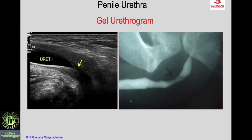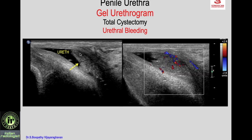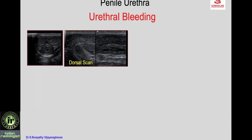In a patient who had total cystectomy for carcinoma of the urinary bladder presenting later with urethral bleeding, a gel urethrogram shows a distended urethra and an irregular mass from the ventral wall of the urethra. Color Doppler showed flow, indicating recurrent tumor in the urethra.